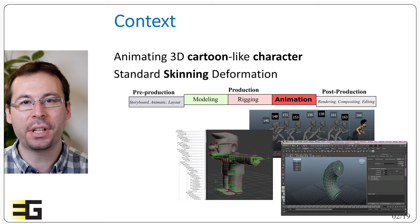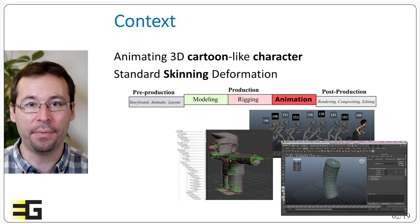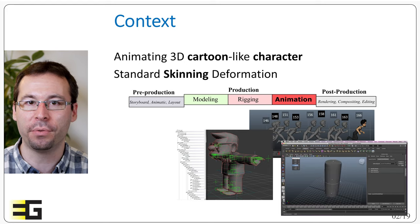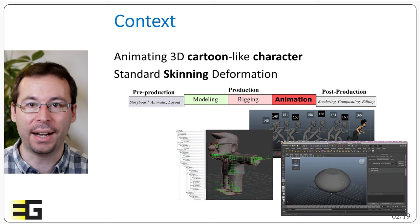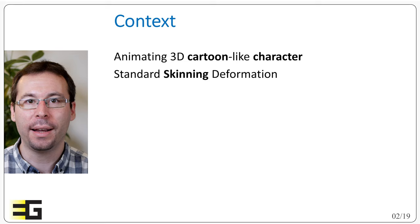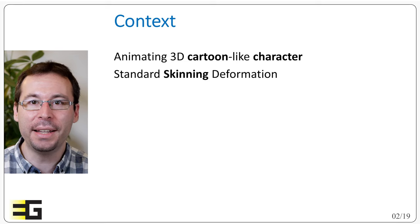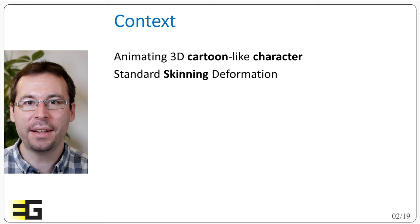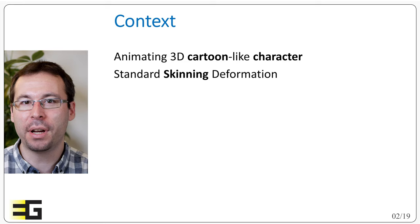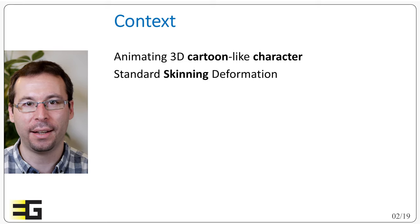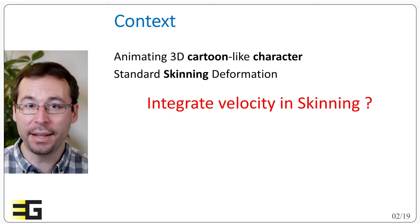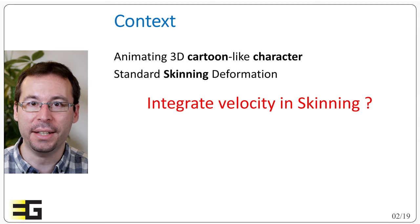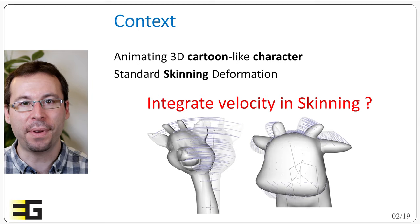Such deformations are usually handled by additional deformers that are provided within the animation software, but they have to be parametrized manually by the artist. And this is where the velocity skinning idea takes place. As we said, these cartoon-like deformations come from the velocity of the character. And the question is, can we actually integrate the notion of velocity in skinning to generate these effects?